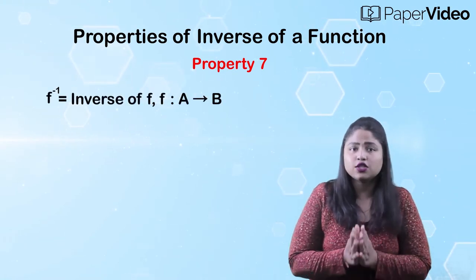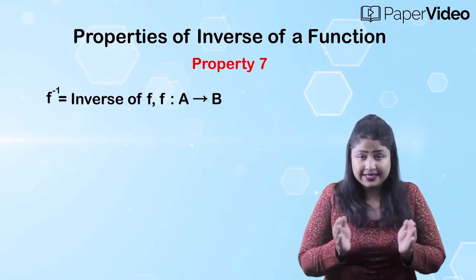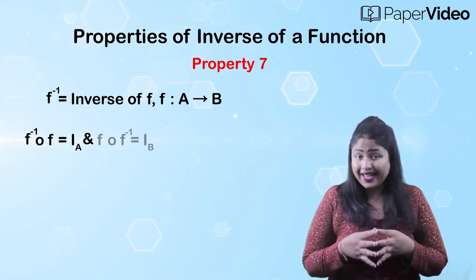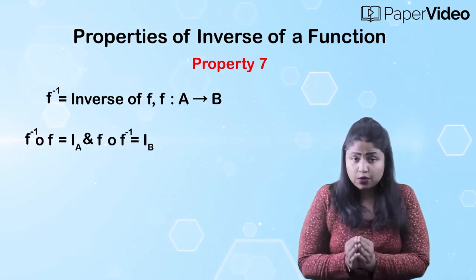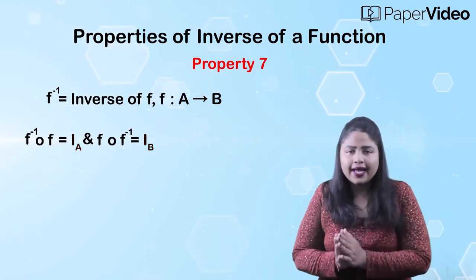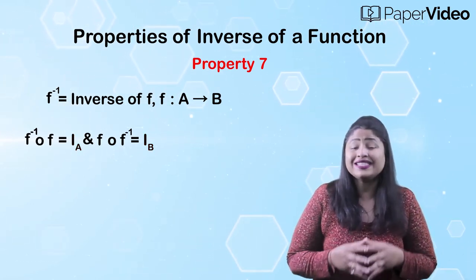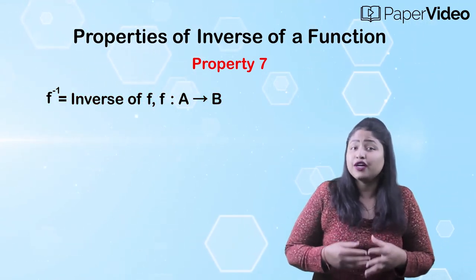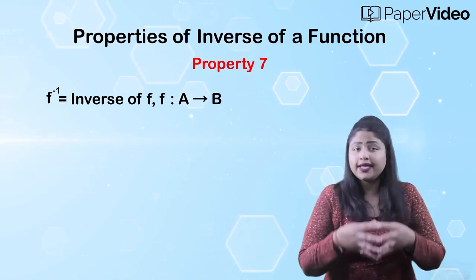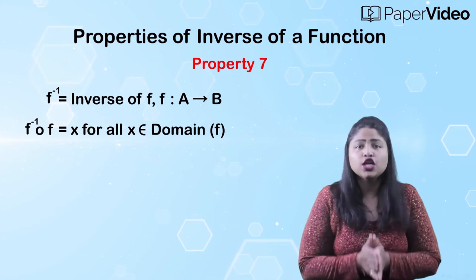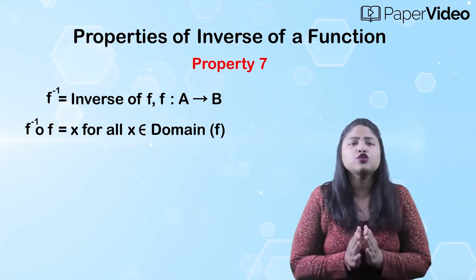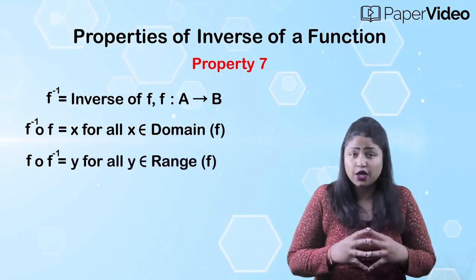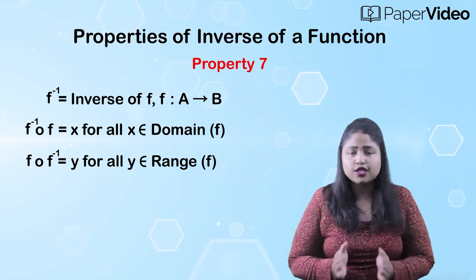According to the seventh property, if f inverse is an inverse of the function f defined on two different sets, then the composition functions f inverse of f equals i_A and f of f inverse equals i_B, where i_A and i_B are the identity functions on the sets A and B respectively. This means that f inverse of f equals x for all x belonging to the domain of f, and f of f inverse equals y for all y belonging to the range of f.